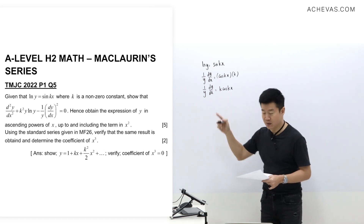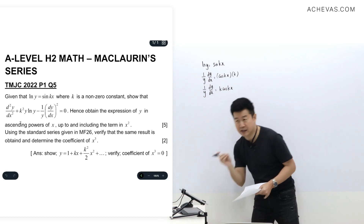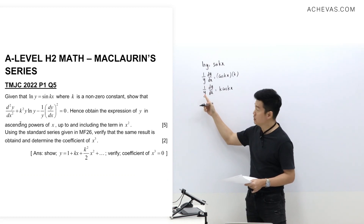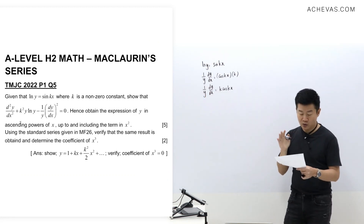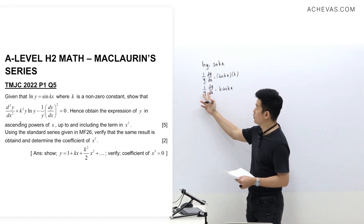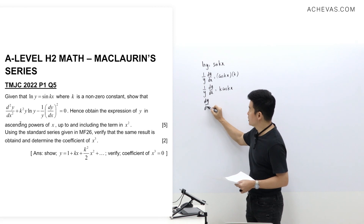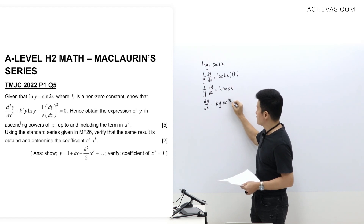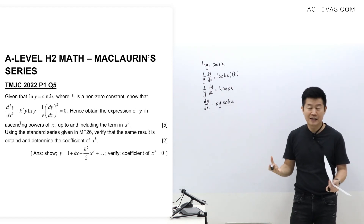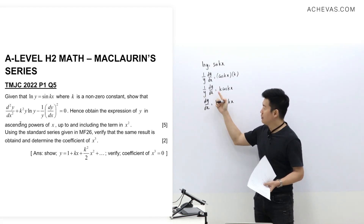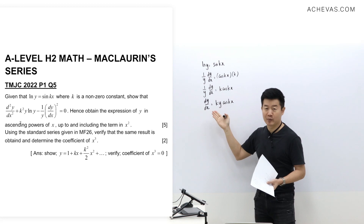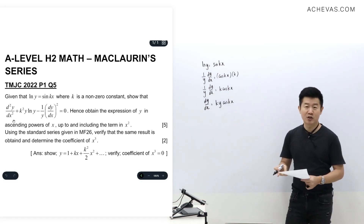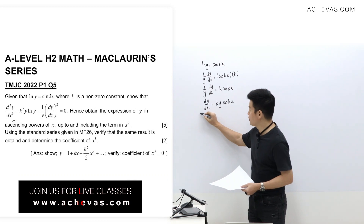Looking at what we are supposed to prove, the d²y/dx² is independent — it does not have a y attached to it. So what I'm going to try to do, although it is not necessary, is to multiply y across to the other side to get a differential equation that looks like dy/dx = k·y·cos(kx), because that is relatively easy to differentiate again and should give us the independent d²y/dx² directly.